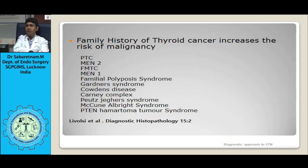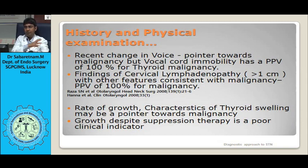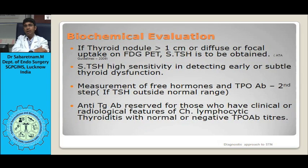Recent change in voice is a pointer towards malignancy, though not a sure-shot sign — it can also occur after FNAC or hemorrhage within a benign nodule. Cervical lymphadenopathy greater than 1 cm is almost always consistent with papillary thyroid cancer. Growth despite suppression with thyroxine is a poor clinical indicator pointing towards malignancy. These are the history and physical examination features we must always look for to ensure we do not miss any malignant case.